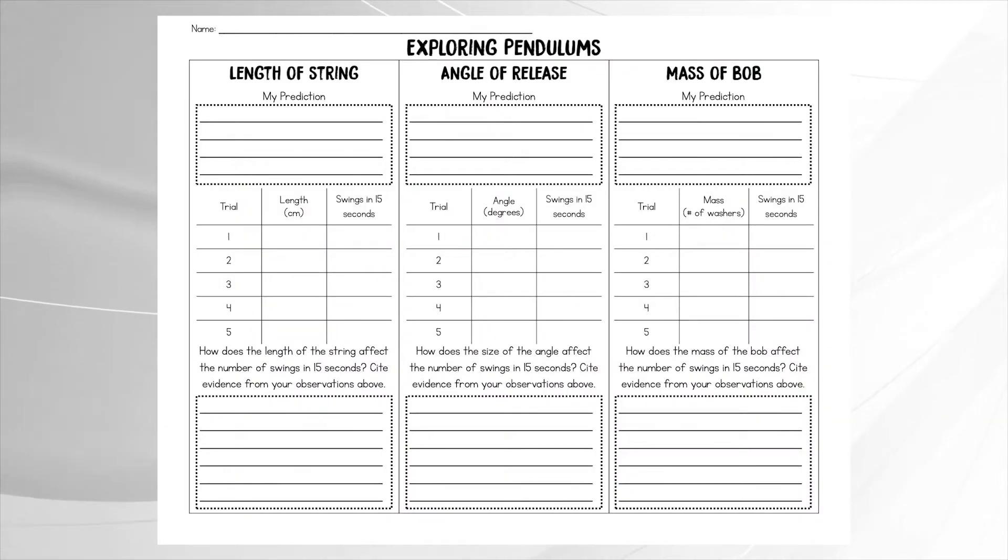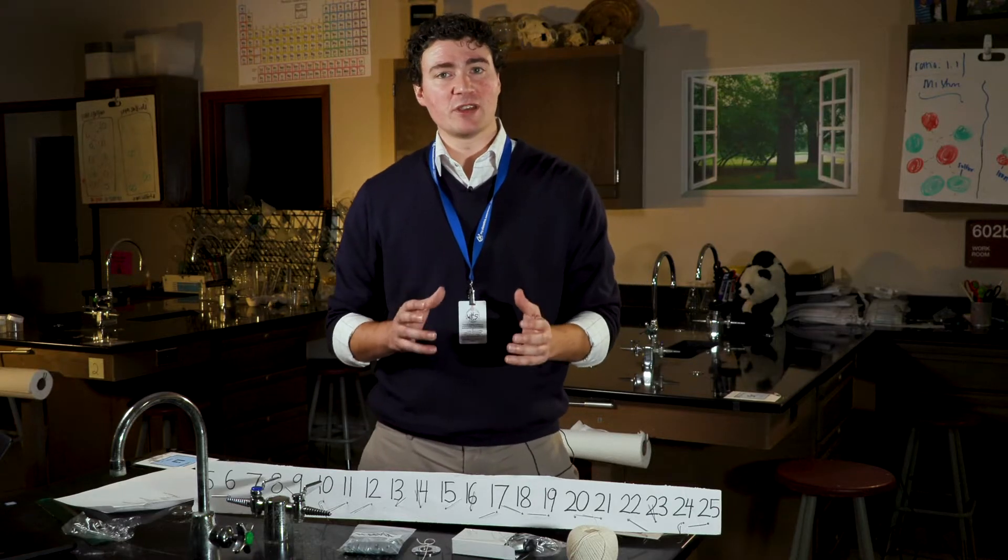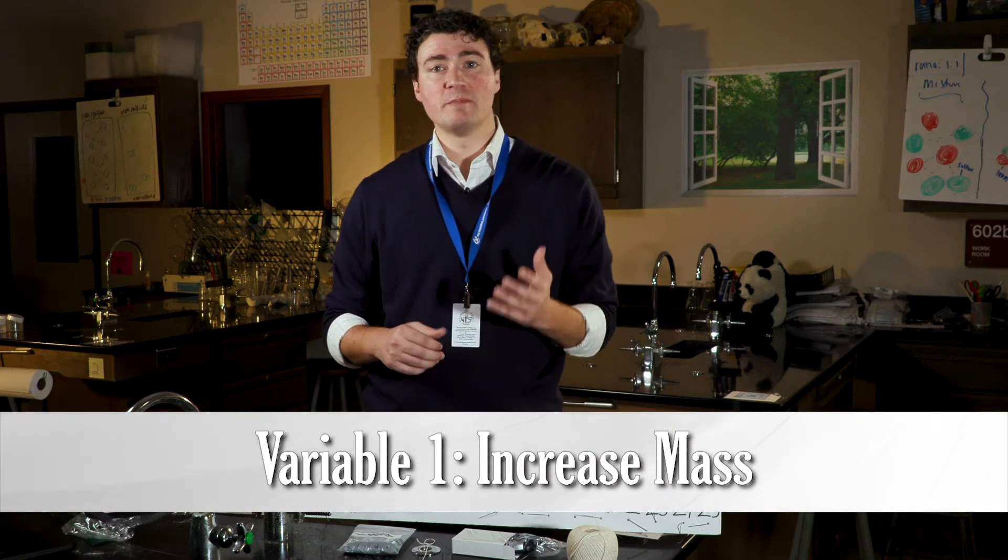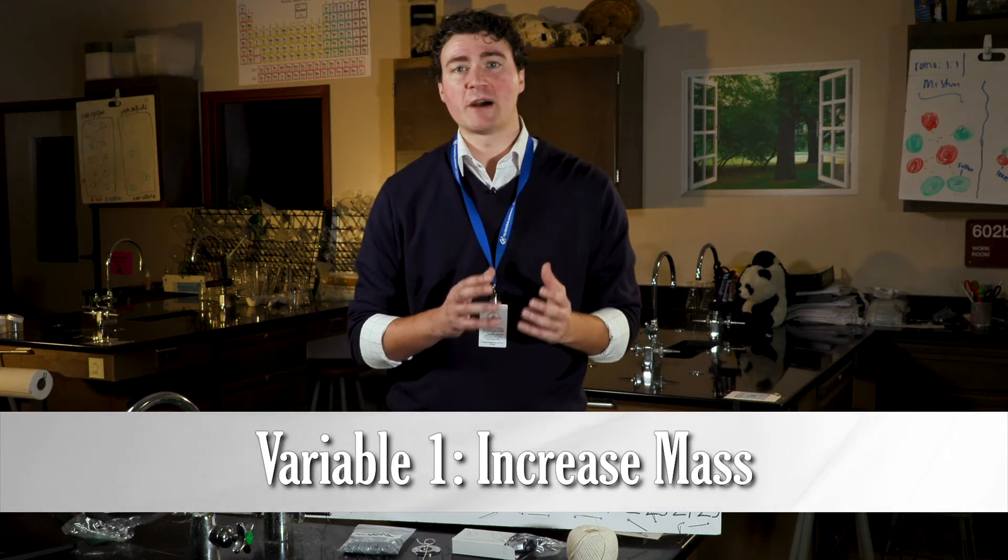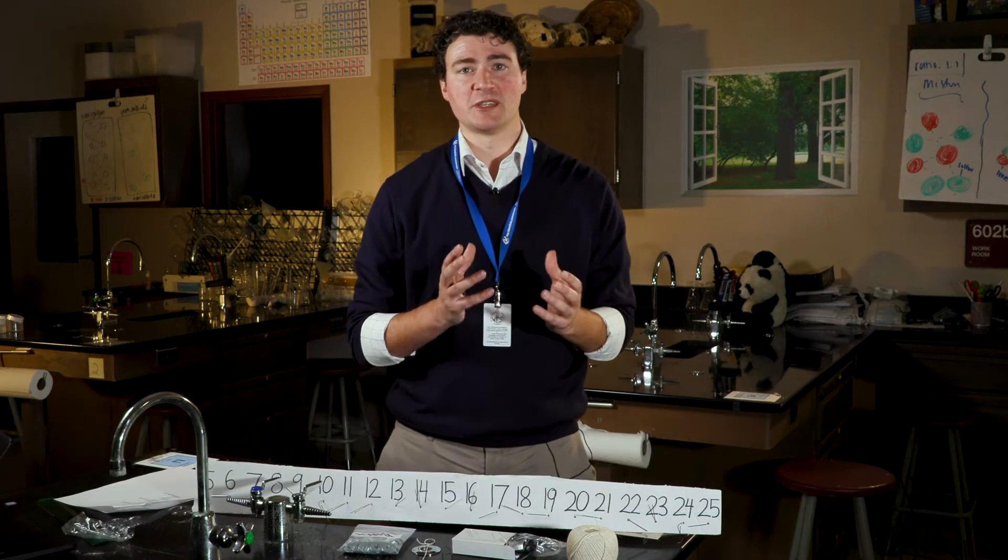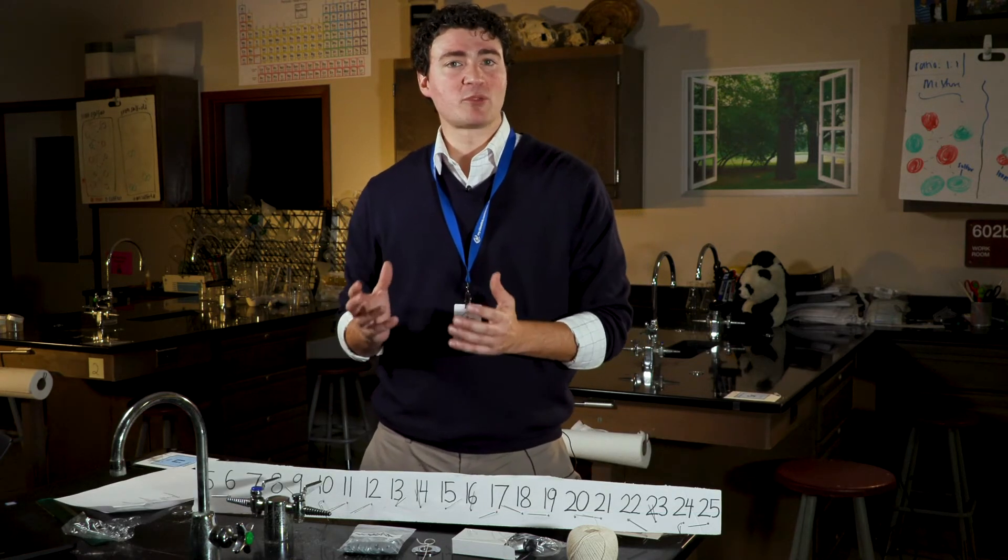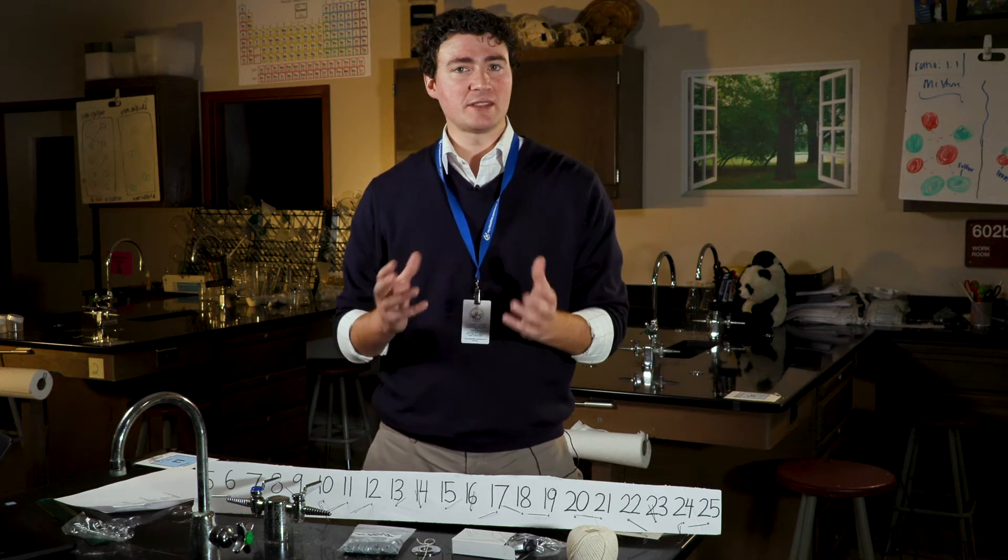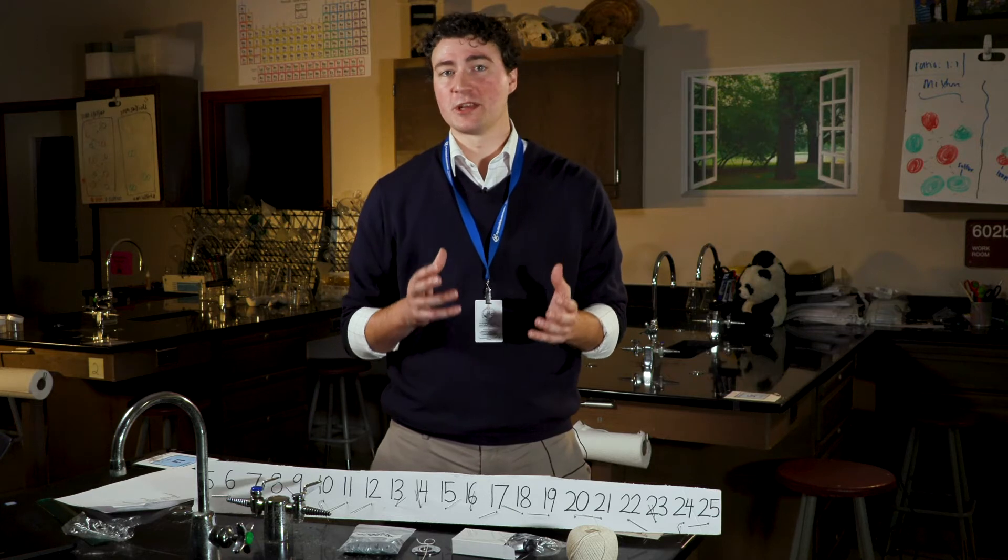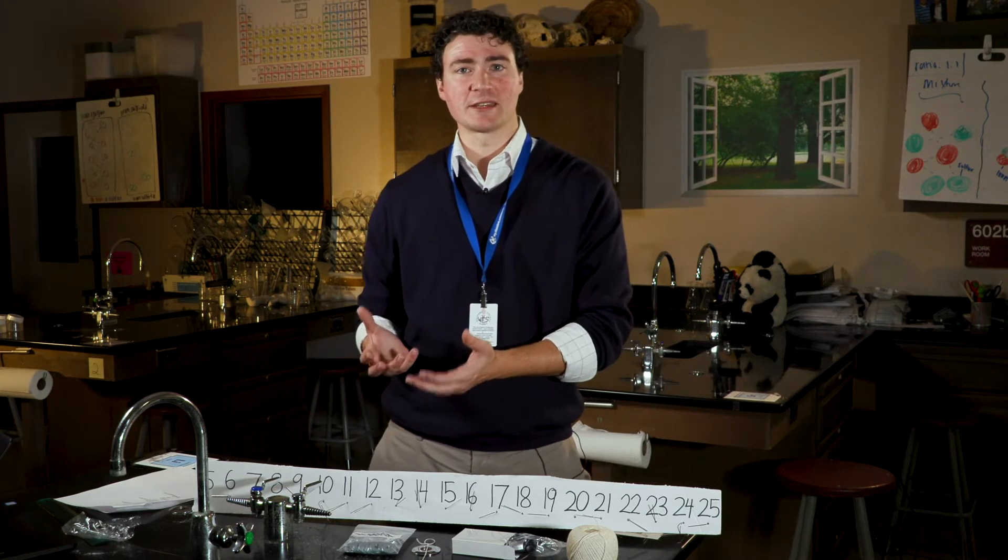To help students record their data, an Exploring Pendulums record sheet is provided for this lesson. The first variable students can predict and then test is to increase the mass of the pendulum by adding a second small washer to their original pendulum design. Students may be surprised to observe that this factor does not impact the number of complete cycles their pendulum will make in 15 seconds.